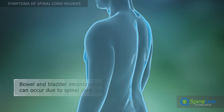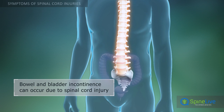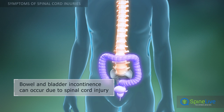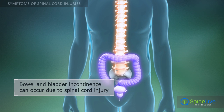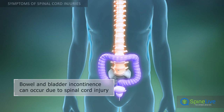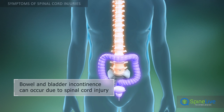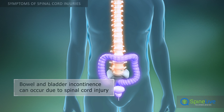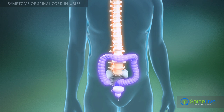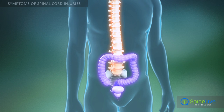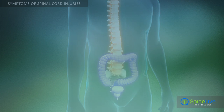In severe cases of spinal cord injury, when the spinal cord is significantly compressed or ruptured, paraplegia with bowel and bladder incontinence often occurs.